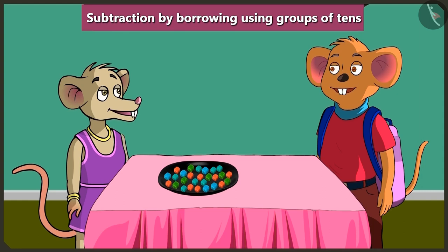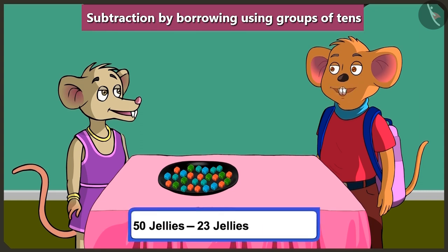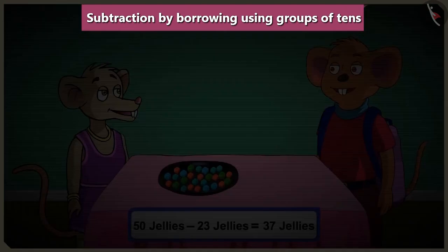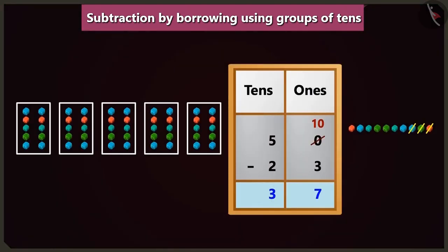So now tell me, how did you know that fifty minus twenty-three is equal to thirty-seven? Look here. I did fifty minus twenty-three with the help of the table of ones and tens. And I got thirty-seven as the answer.